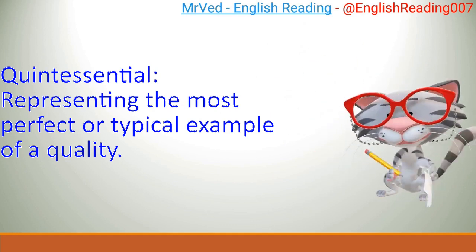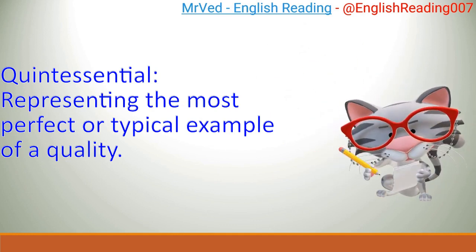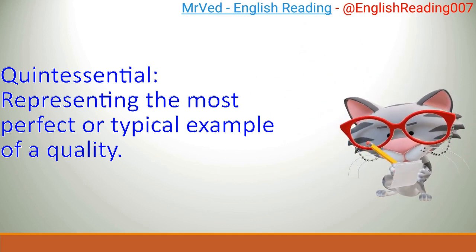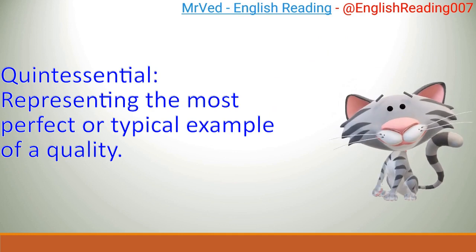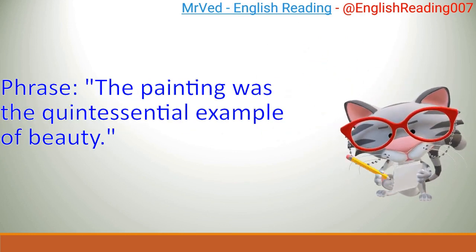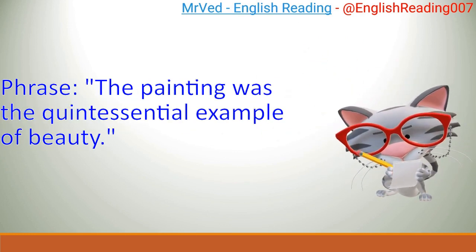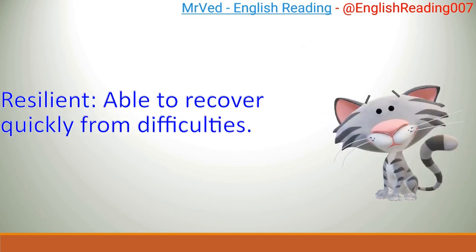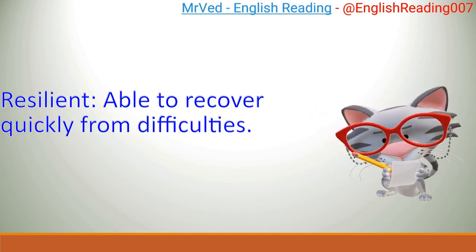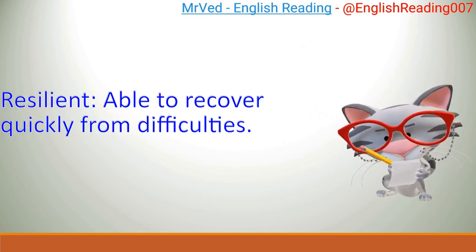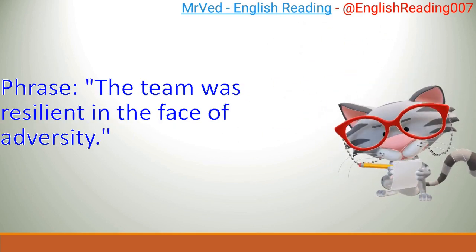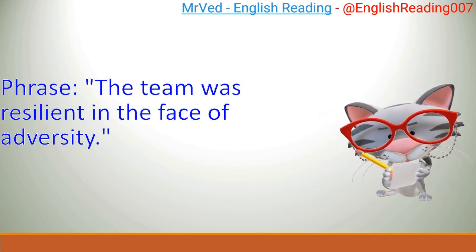Quintessential: representing the most perfect or typical example of a quality. Example: The painting was the quintessential example of beauty. Resilient: able to recover quickly from difficulties. Example: The team was resilient in the face of adversity.